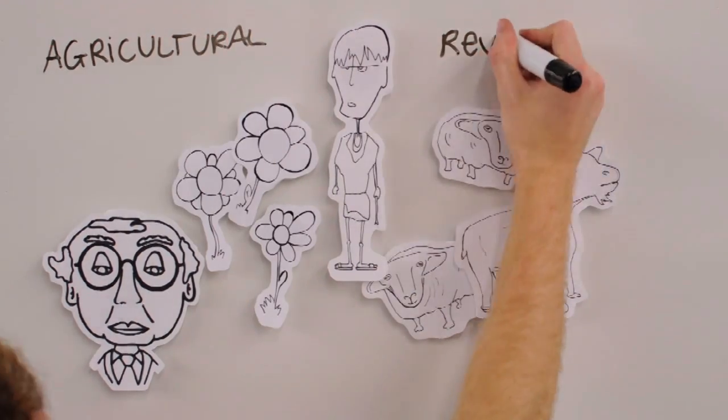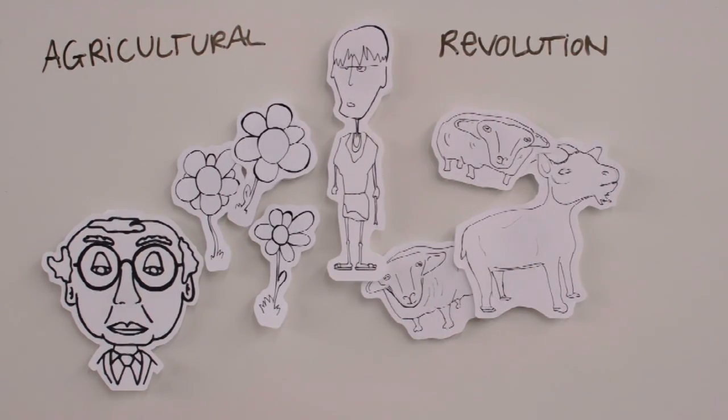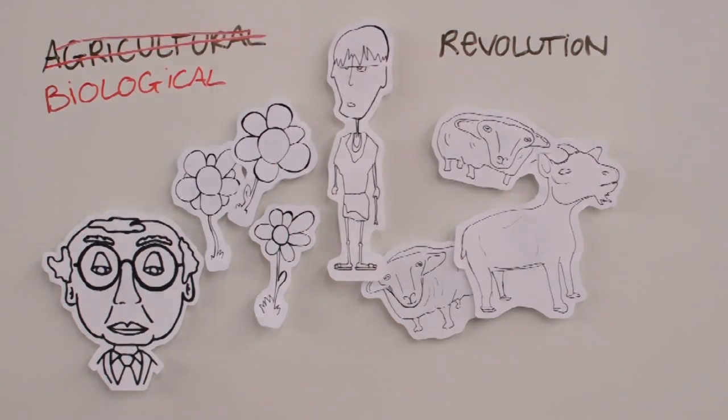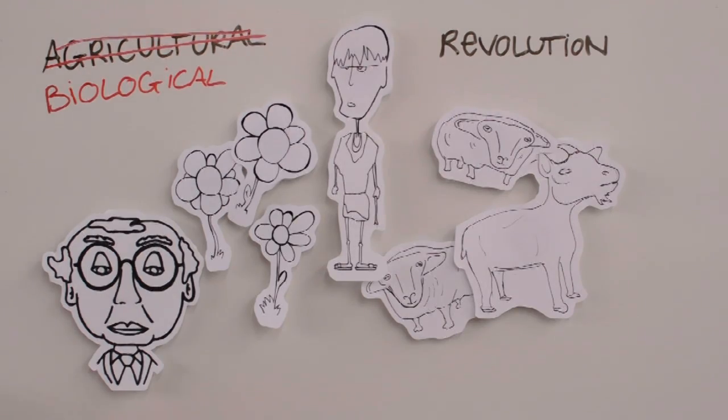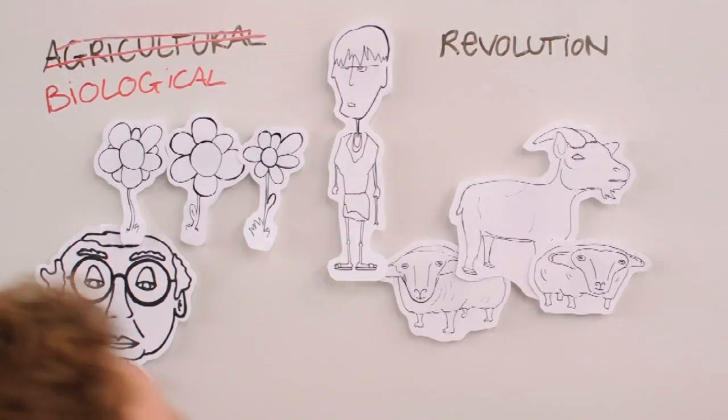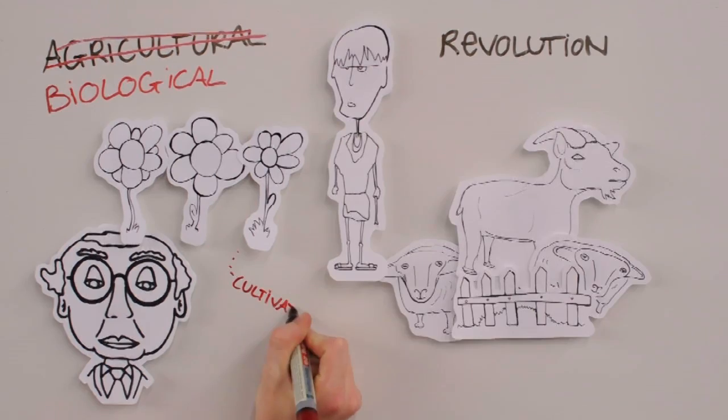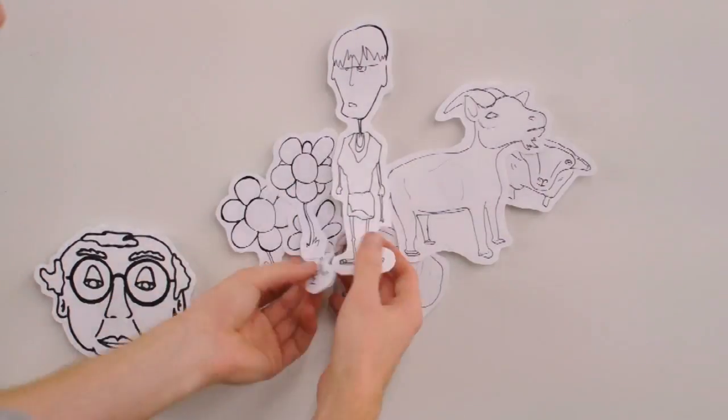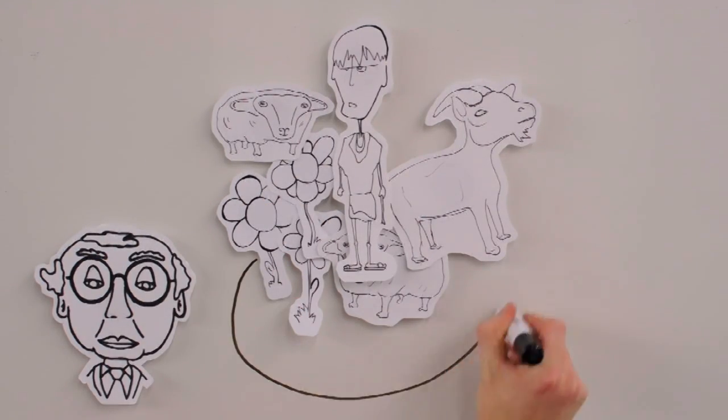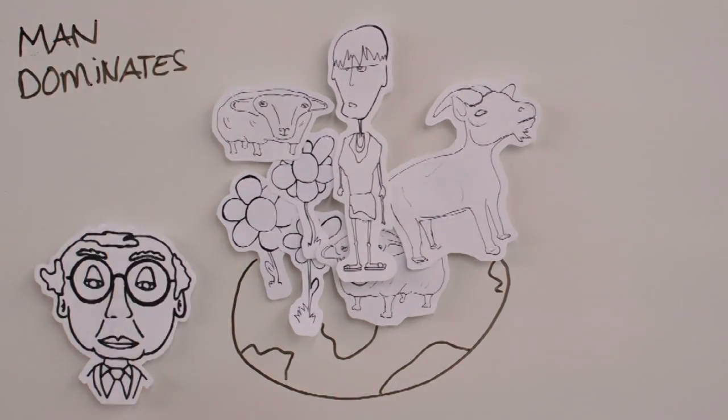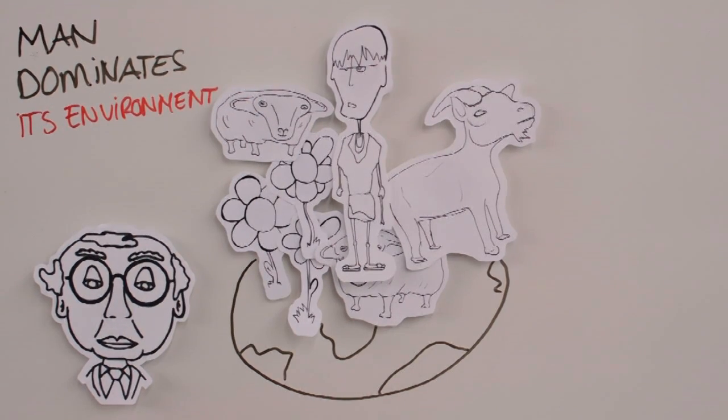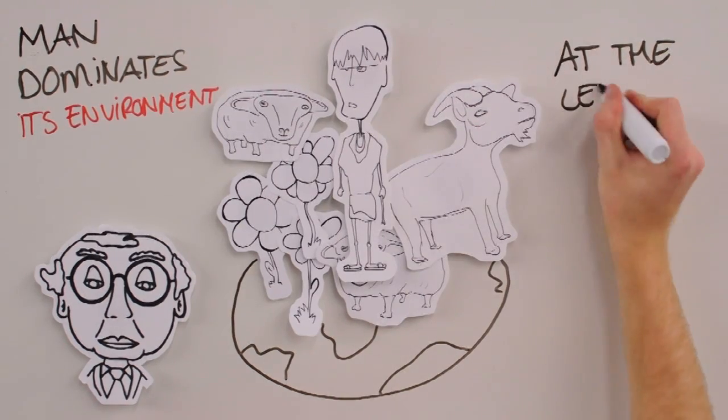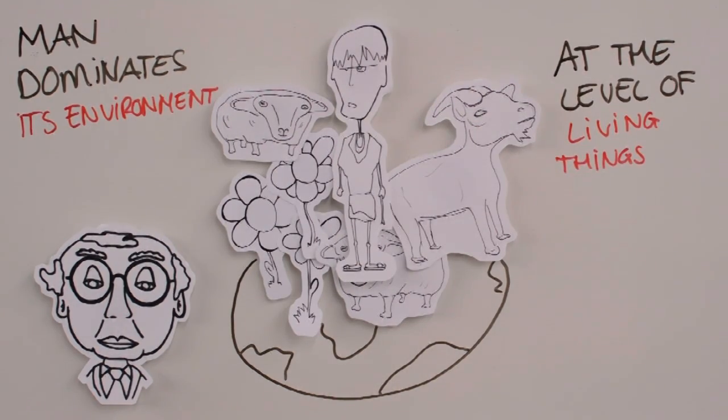It's usually called the agricultural revolution, but I think of it as something much wider, the biological revolution. There was intertwined in it the cultivation of plants and the domestication of animals in a kind of leapfrog. And under this ran the crucial realization that man dominates his environment in its most important aspect, not physically, but at the level of living things, plants and animals.